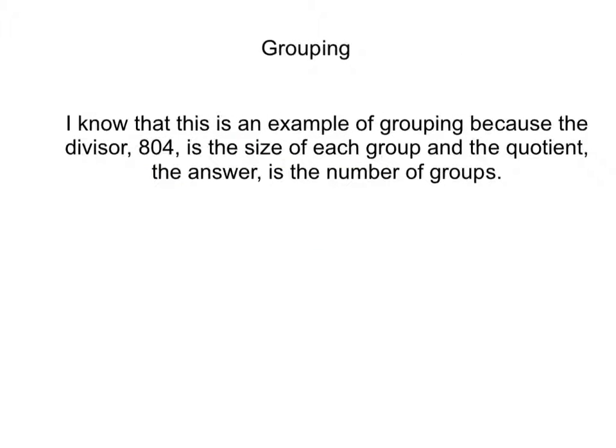I know that this is an example of grouping because the divisor, 804, is the size of each group, and the quotient — the answer — is the number of groups.